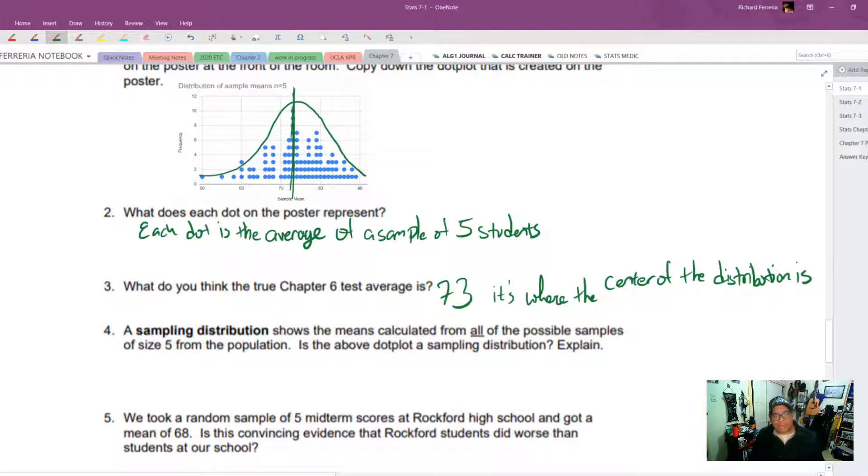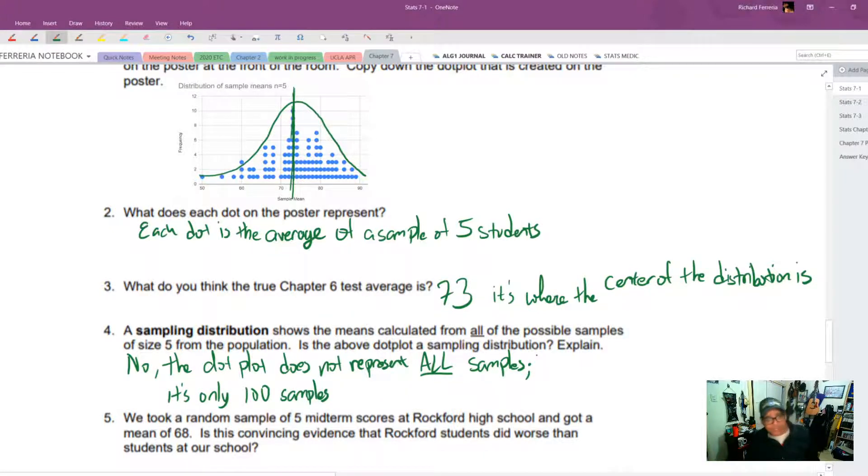Number four says a sampling distribution shows the means collected from all possible samples of size five from the population. So is this a sampling distribution? And we already said, no. So the dot plot does not represent all samples. It's just 100 samples. And believe me, there's more than a hundred samples of size five that could have been taken from the population.